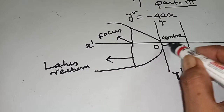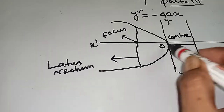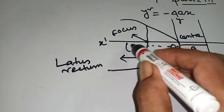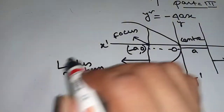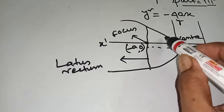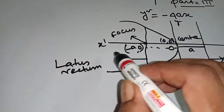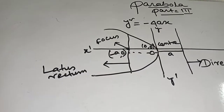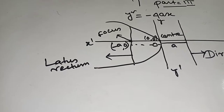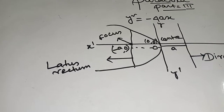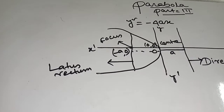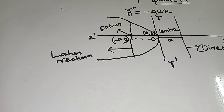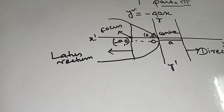That means this distance is 'a' and this is minus a. So the focus is at minus a comma 0, and the center is at 0 comma 0. When the parabola is not shifted, the equation is y squared equal to minus 4ax. In the previous class I discussed y squared equal to 4ax, and today y squared equal to minus 4ax.